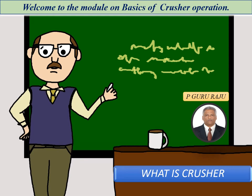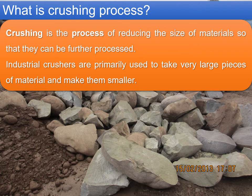Crushing is the process of reducing the size of materials so that they can be further processed. Industrial crushers primarily take very large pieces of materials and make them into smaller pieces as per requirement. For concrete, we normally go for 20 mm nominal maximum size of aggregate. For wet mix macadam we go for 53 mm maximum size, and similarly for DBM and BC, depending upon the grading adopted, we choose the size of the aggregates.